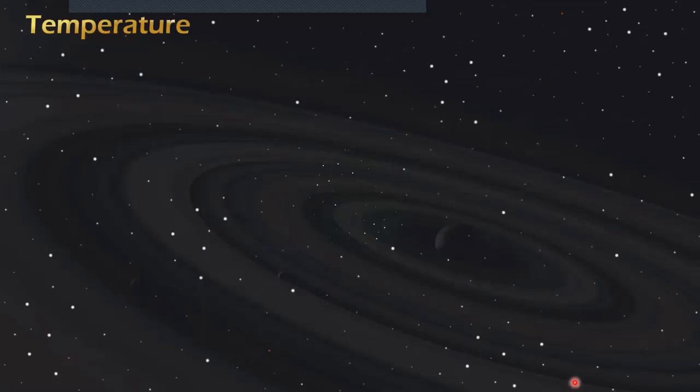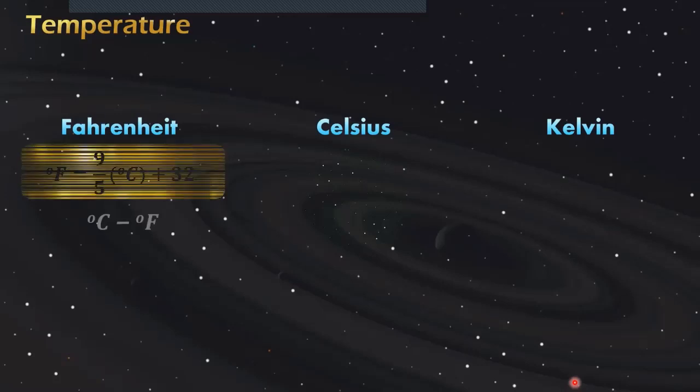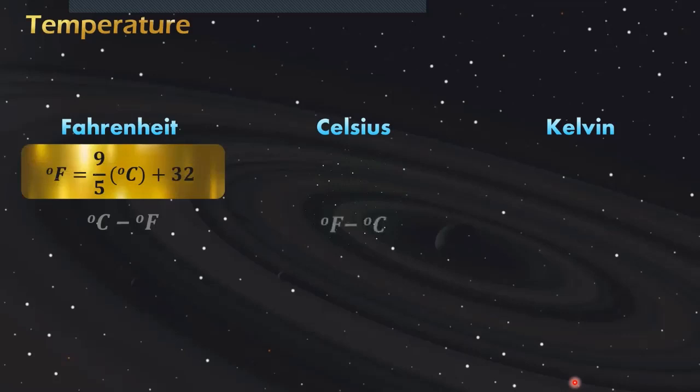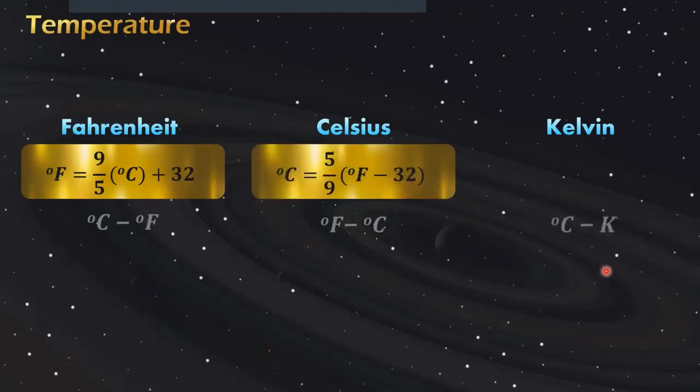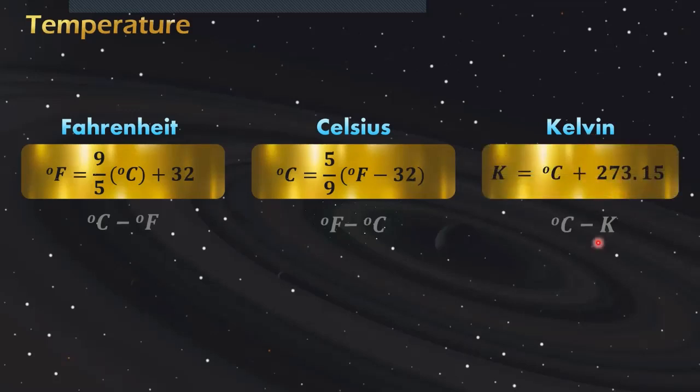Let's proceed to temperature. We have three common temperature scales: Fahrenheit, Celsius, and Kelvin. If we convert Celsius to Fahrenheit, we use this formula. To convert Fahrenheit to Celsius, we use this formula. And to convert Celsius to Kelvin, we use this formula.